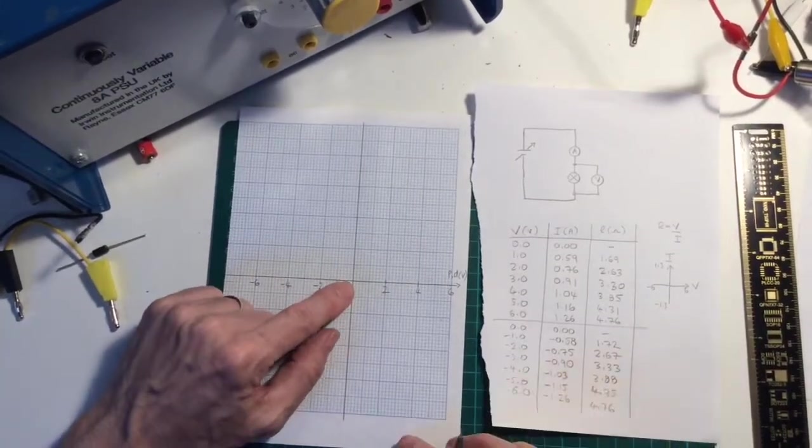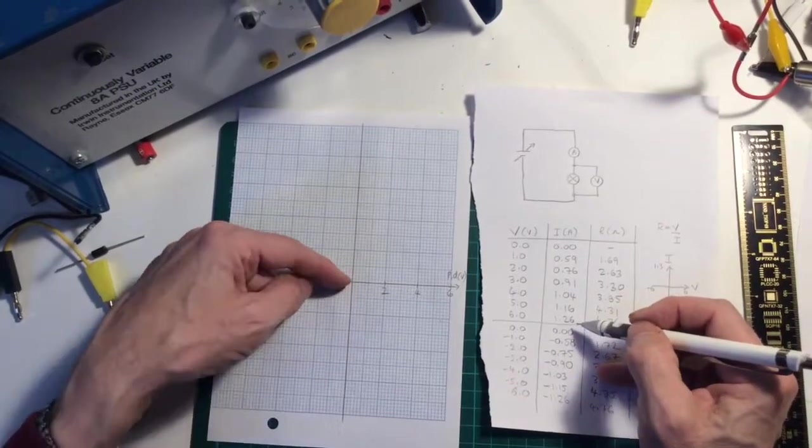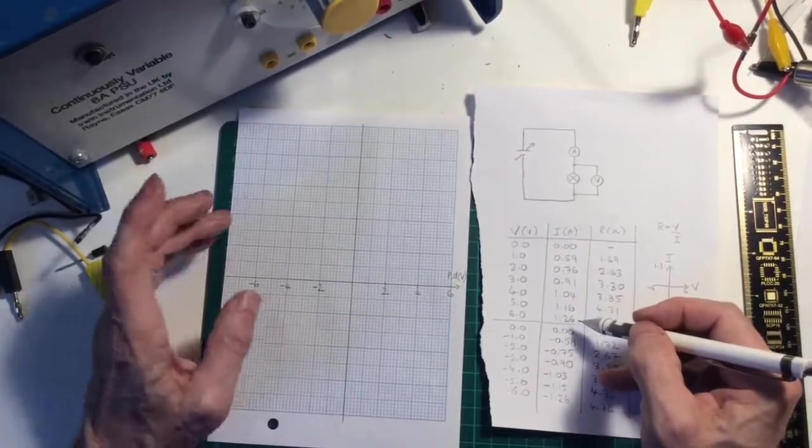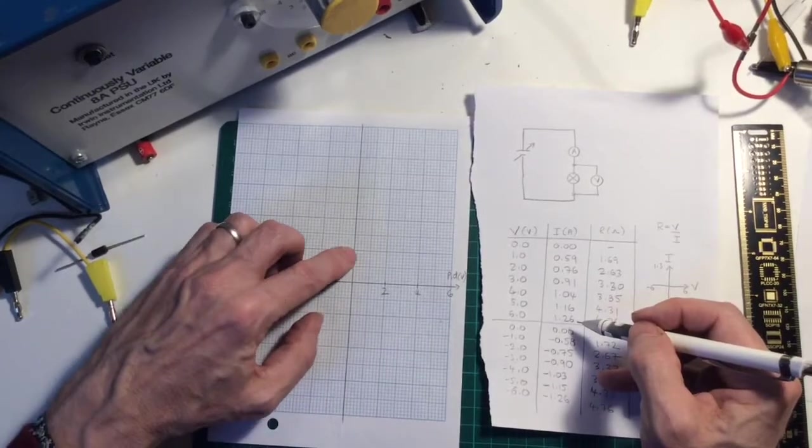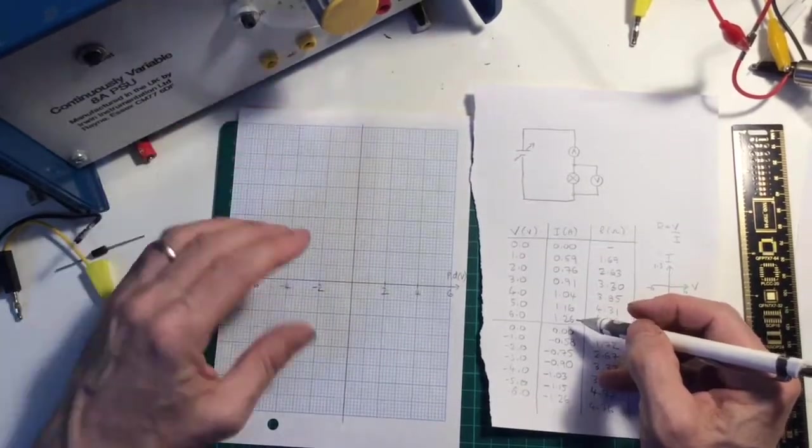Now I've got to start with zero and I've got to get up to 1.26 and I've got to go down to minus 1.26. 0.1, 2, 3, 4, 5, 6, 7, 8, 9, that doesn't fit.